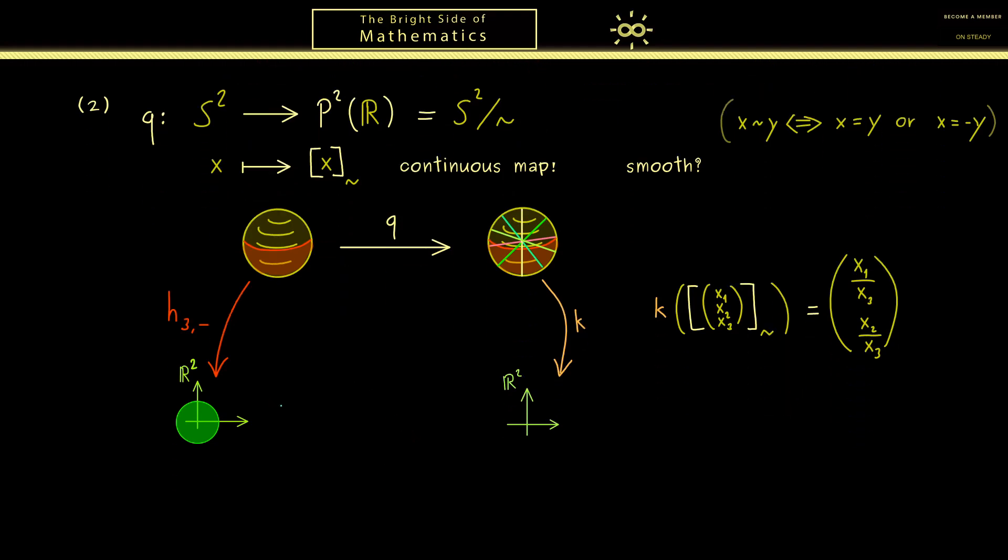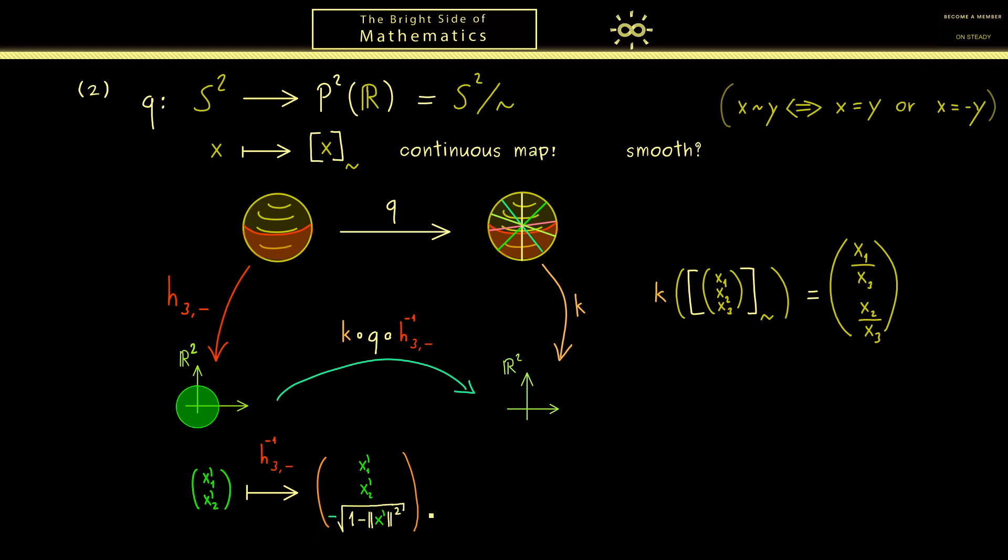Now by knowing this, we can look at the new map here from R² to R². So it's k after q after h3 minus inverse. And the question as always is, is this a differentiable map? And to answer this, let's go step by step through the picture. The first step we already know, h inverse sends this point to the sphere, such that we have a vector with three components, including this square root. And then, in the next step, our canonical projection q comes. There, not a lot happens, we just take the equivalence class of the given point. And then in the last step, we send this equivalence class to R² again. So this is what the map k does. So you see, what we have here is now a division by this whole square root there. So first, we divide x₁' by it, and then x₂'. So you see, we get out a well defined vector in R² again.